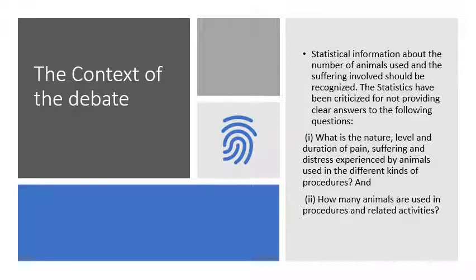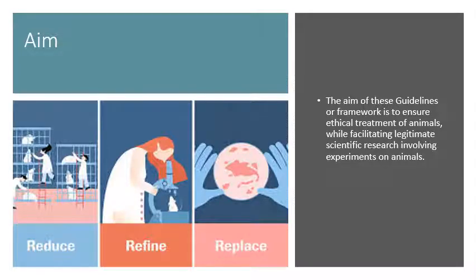Whenever we start a research project, we go to statisticians to calculate the numbers of humans or animals involved. But in spite of this, they cannot answer questions about the nature and duration of pain, suffering, and distress to that animal, or how many animals can be used in procedures. So the aim of these guidelines and frameworks is to ensure ethical and merciful treatment of animals while facilitating legitimate scientific research involving them.